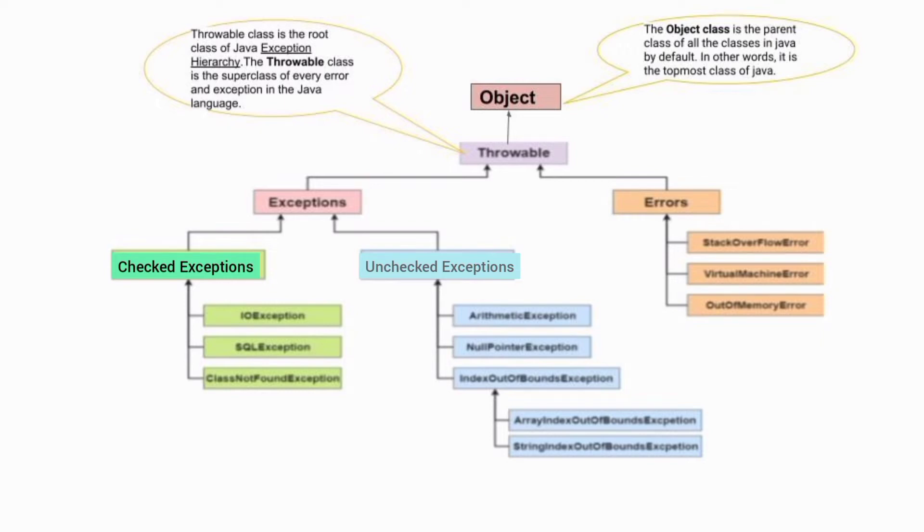As shown in the figure, Throwable class, which is derived from the Object class, is at the top of the exception hierarchy from which all exception classes are derived indirectly or directly. It is the root of all exception classes and is present in java.lang package. Throwable class has two subclasses: Error and Exception.